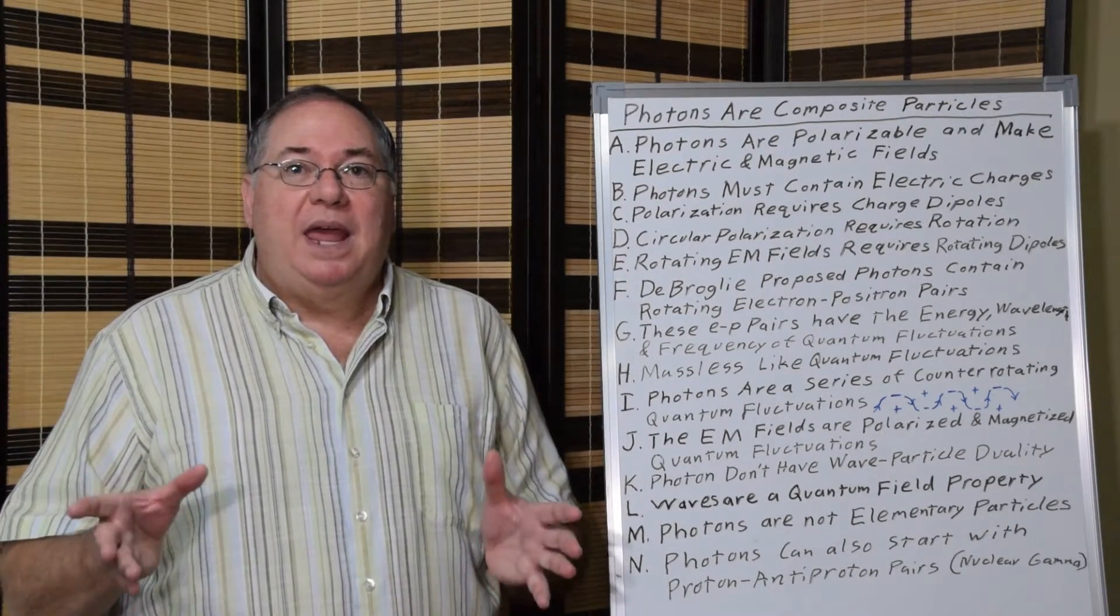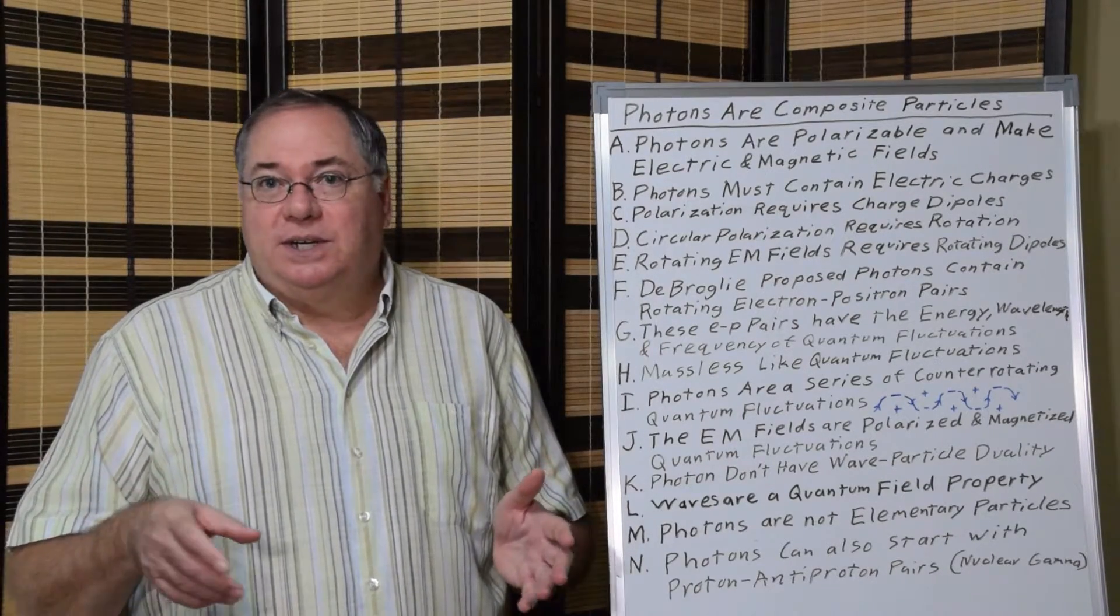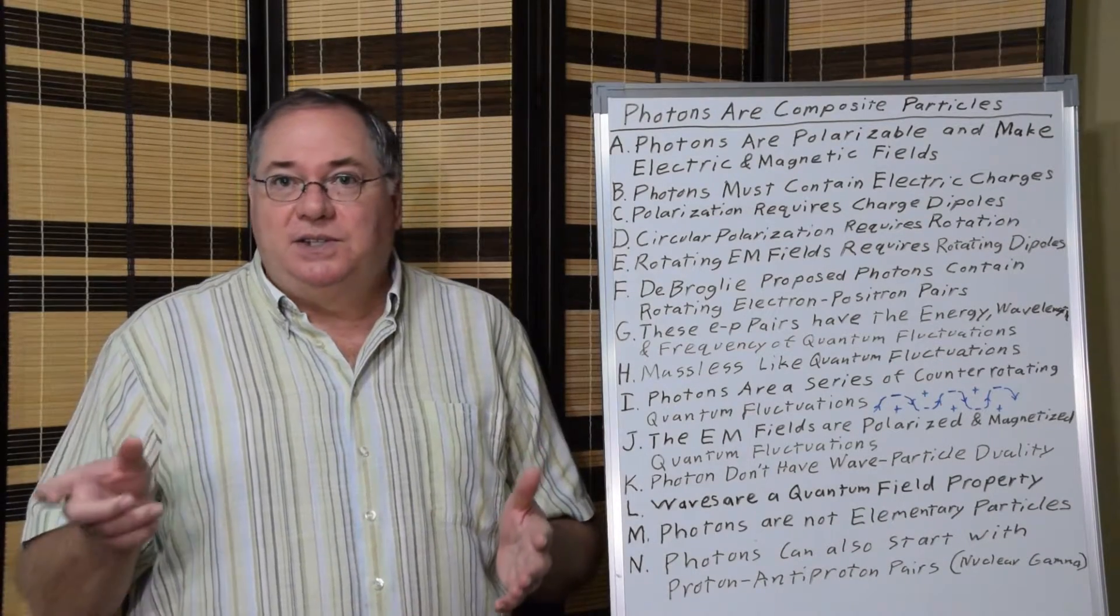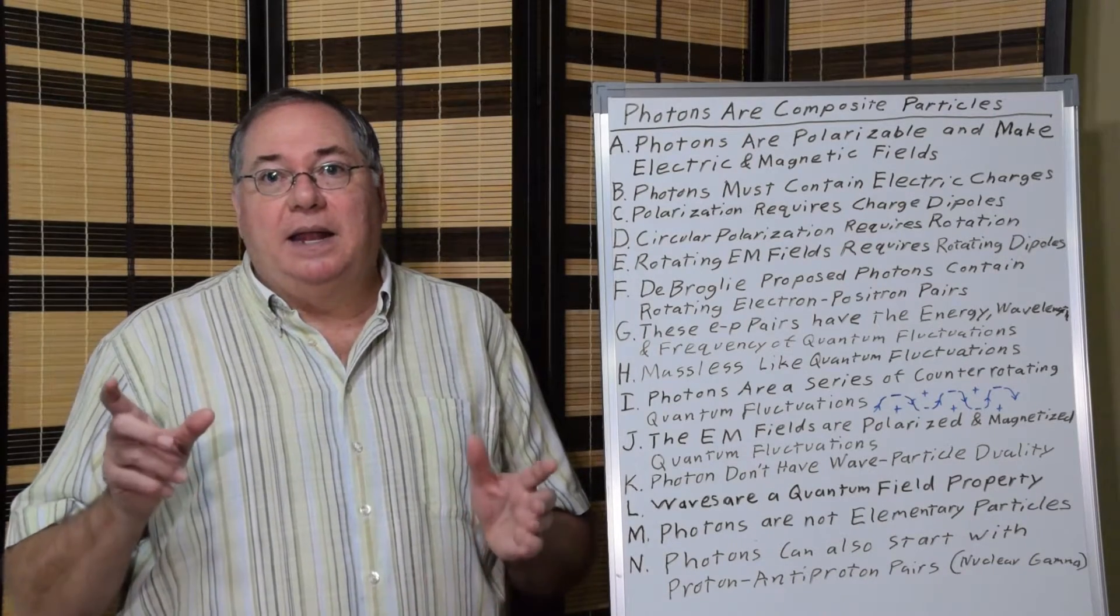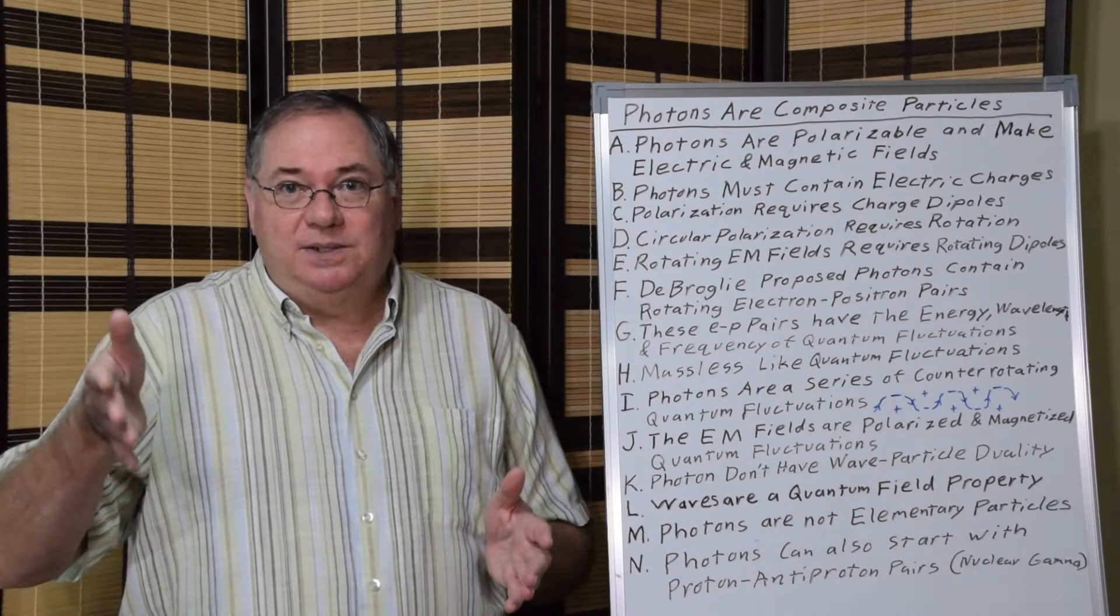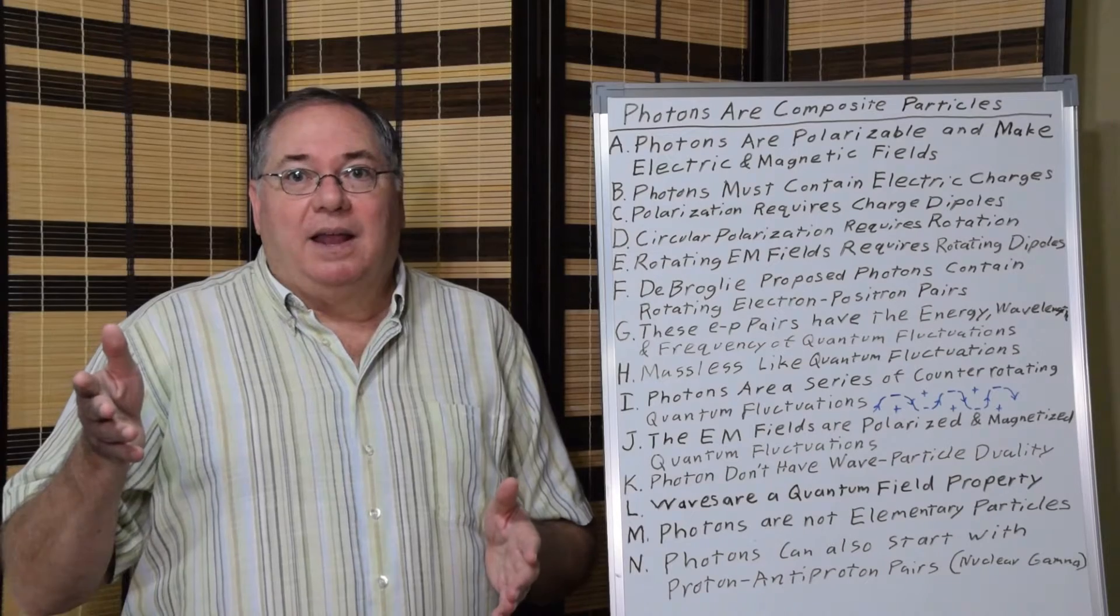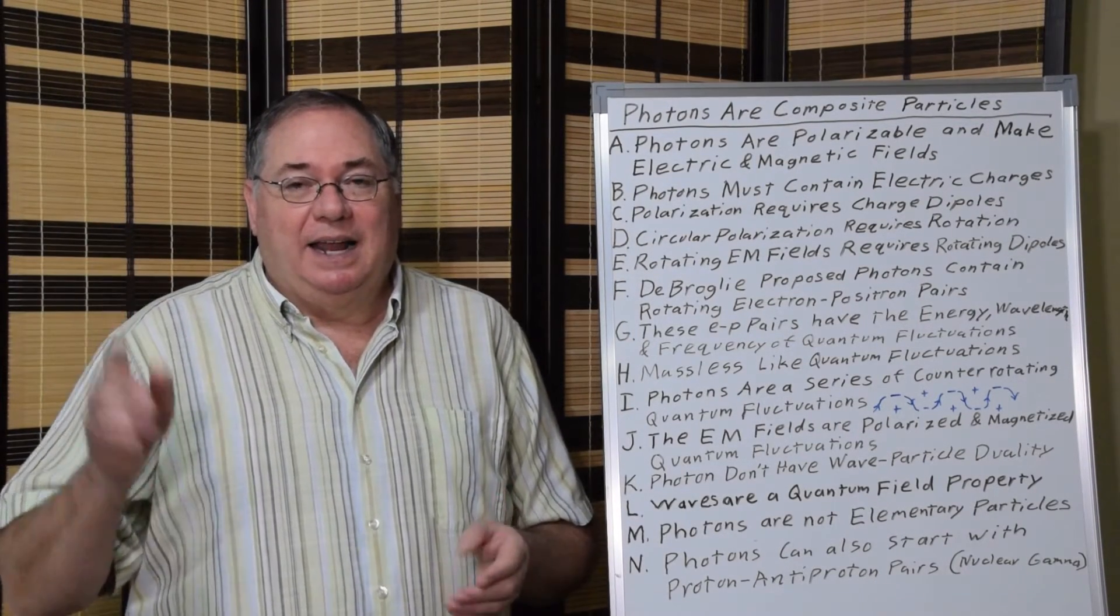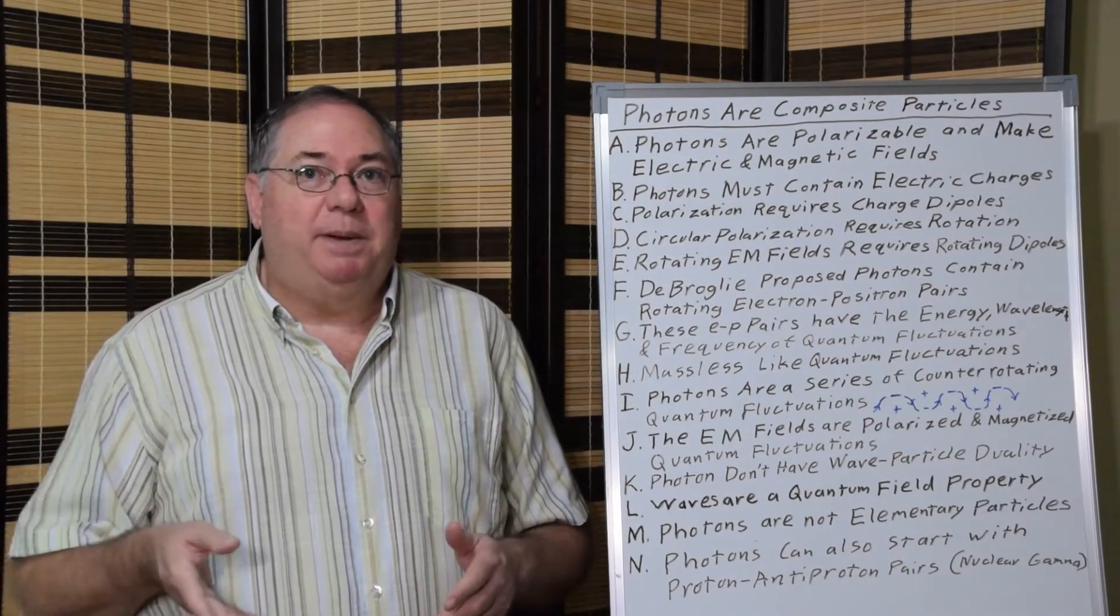So what we have then, when we're looking at a photon, in order to get the polarization and magnetic field development correct, is this series of counter-rotating quantum fluctuations. And then the rotating quantum fluctuations cause other quantum fluctuations in the quantum field to rotate, because they get polarized and magnetized and generate electric and magnetic fields. And those fields propagate through space.